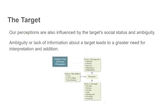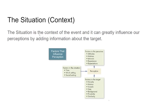Target social status and ambiguity also matter. Lack of information about a target leads to a greater need to interpret. The situation can influence our perceptions depending on what we find ourselves in. If you don't have a lot of time to look at something, or it's in a context that doesn't make sense to you, these things will influence how well you see it.